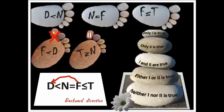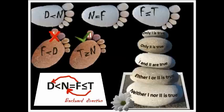Now conclusion two: t greater than or equal to n. Draw a line from t to n — reverse direction. The highest priority symbol between t and n is less than or equal to. Since it is backward direction, read it as t greater than or equal to n. So conclusion two is right. The answer is only conclusion two is true.